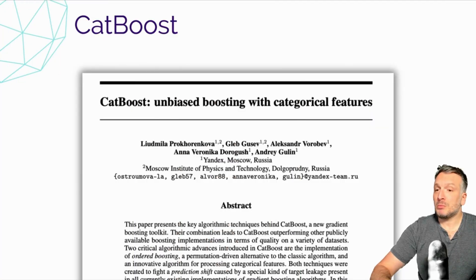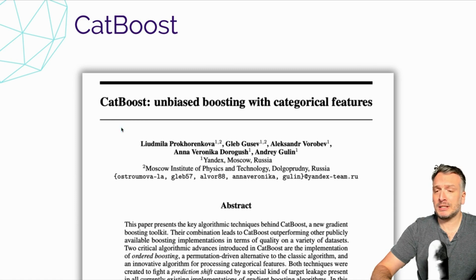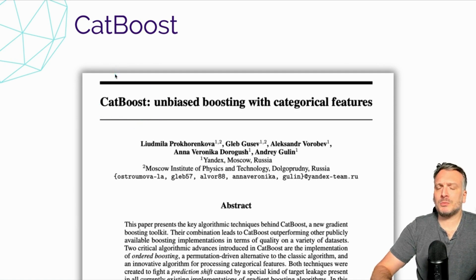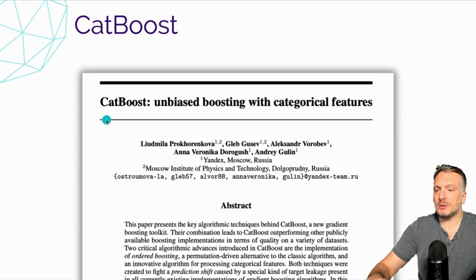CatBoost is another boosting tree algorithm that was introduced in 2017 by Yandex, a Russian company. CatBoost introduces two different techniques. The first one is a target encoding technique that allows encoding categorical variables in an efficient manner. The second one is called ordered boosting. They recognize that one of the problems of the boosting algorithm is using the error measured on the previous iteration, which leads to a special case of data leakage. At each iteration, we reuse the same targets, and this leads to overfitting.